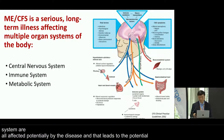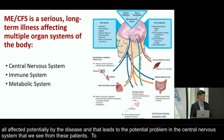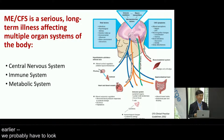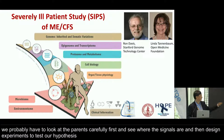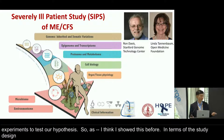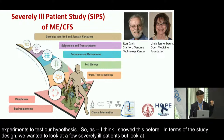To understand this problem, we probably have to look at patients carefully first, see where the signals are, and then design experiments to test our hypothesis. We basically wanted to look at a few severely ill patients and examine their genomic sequence, their RNA sequence and expression level, their proteins, and their metabolites, to see what are the differences between the patients and the controls.